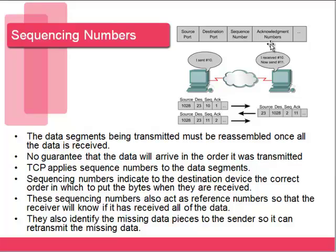Another way TCP is reliable is through sequence numbers. We send all segments out on the network, but there's no guarantee they'll be received in the same order they were sent. We might receive segments 1, 2, 5, 6, 10 and then go get the missed ones later. Because of this, we need a way to reassemble segments in the correct order and confirm everything arrived — and that's done through sequence numbers. In the lab for this chapter, you'll sniff packets and see these sequence numbers on each TCP packet, along with acknowledgements and sliding windows.